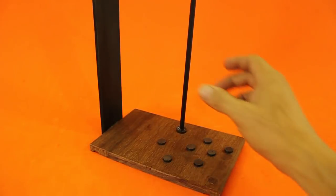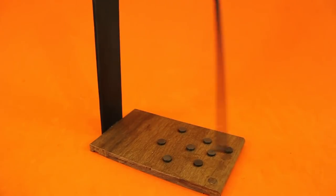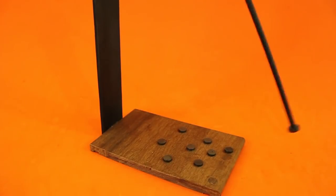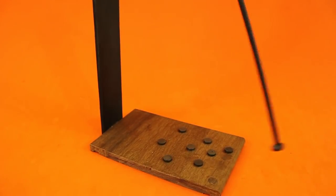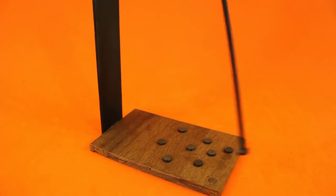This pendulum has a chaotic movement. It is sensitive to the initial conditions, that is, the position and speed at which we start its movement. You can make it work a million times and never ever the pendulum will follow the same path.